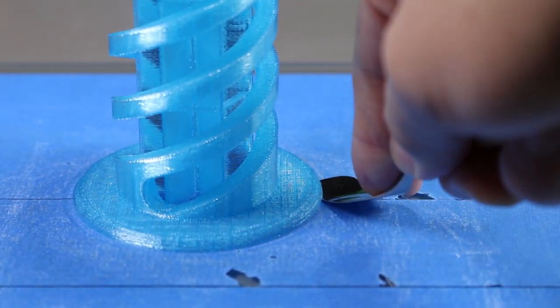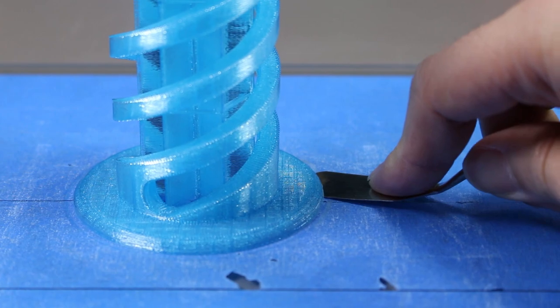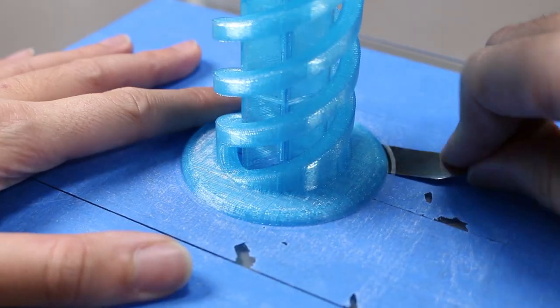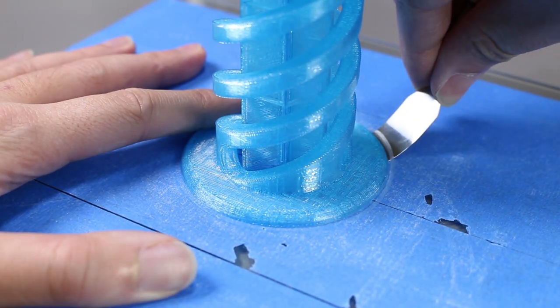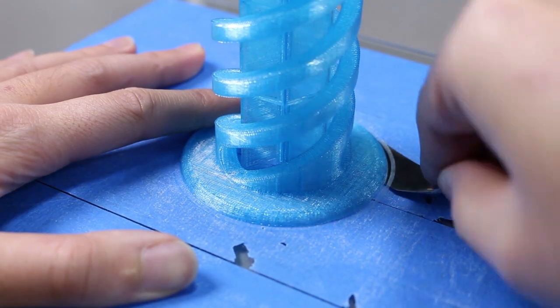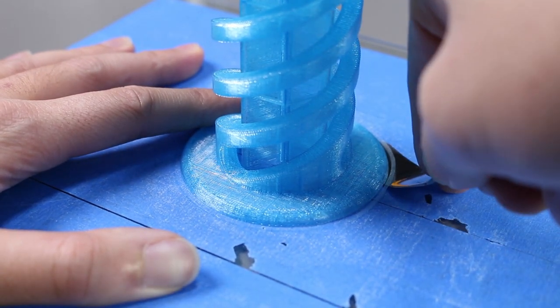We can see here with the print removal knife it's really hard to even dig it underneath the blue tape to pop the PLA print off. It's really stuck and it's especially hard moving the print removal knife into the center of the PLA print.